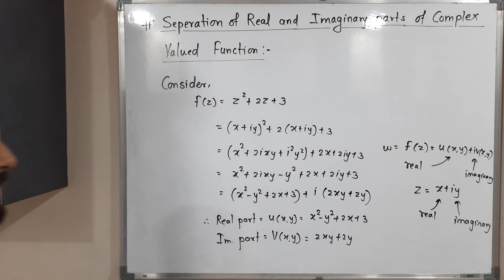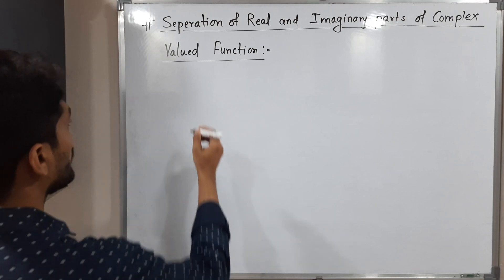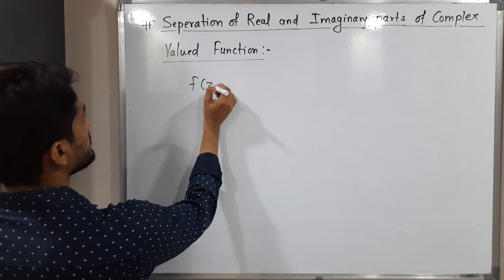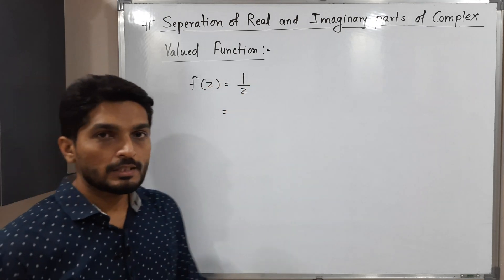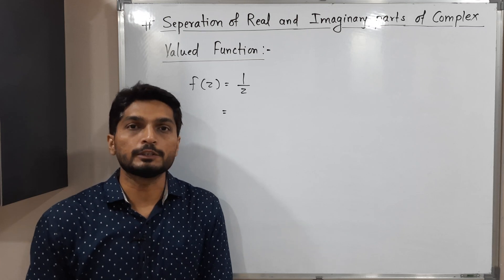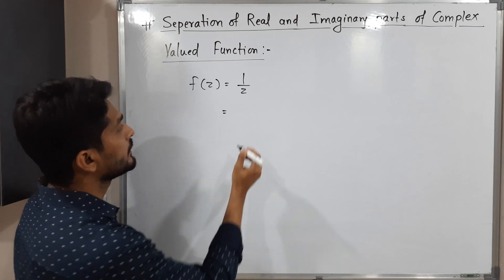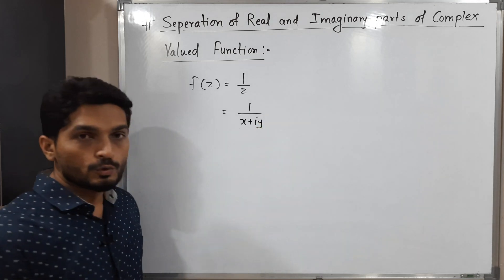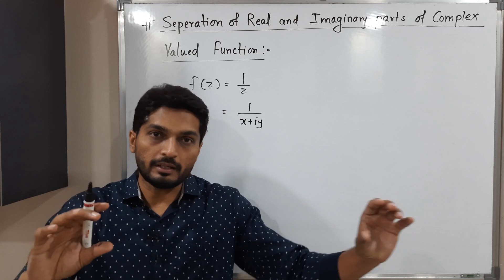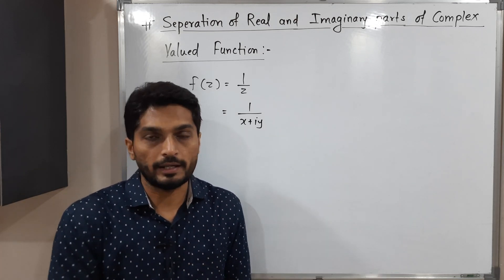Let us discuss one more example — please take a screenshot of the previous result. For the second example, we have the function f(z) equal to 1 over z. Now, just as before, the first step is to replace z by its Cartesian form x plus iy, giving us 1 over (x plus iy). We need to separate the real and imaginary parts — terms with i and terms without i.